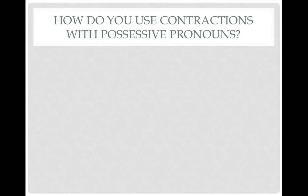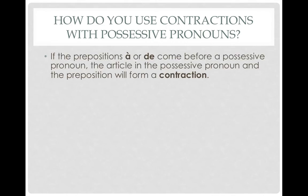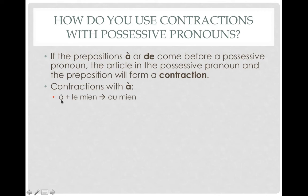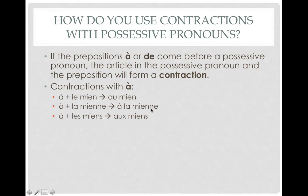Lastly, contractions with possessive pronouns. If you see the prepositions à or de before a possessive pronoun, the article in the possessive pronoun — le, la, or les — and the preposition will form a contraction. With à: à and le become au, so it's au mien. À and la stays the same: à la mienne. À and les becomes aux, pronounced 'o' — aux miens, and for feminine, aux miennes.